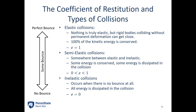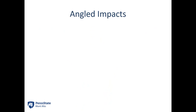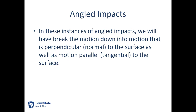Those are our three types of collisions: elastic, semi-elastic, and inelastic. When we have an angled impact — rather than dropping the basketball straight down, we bounce it off at an angle — things get a little more complicated. In this case, the final velocity over the initial velocity is not going to be equal to our coefficient of restitution, and we'll need to add an extra step into our analysis.